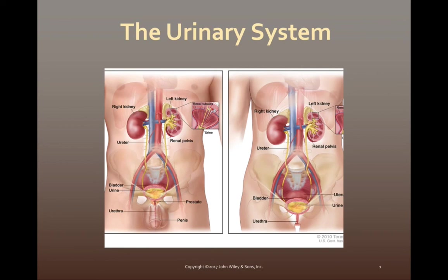All right, everyone, welcome back to our next lecture presentation that will cover chapter 26. Chapter 26 is the urinary system. In this chapter, we're going to cover the components of the urinary system, the anatomy of the kidneys, and go over the processes by which the kidneys are going to excrete nitrogenous wastes.